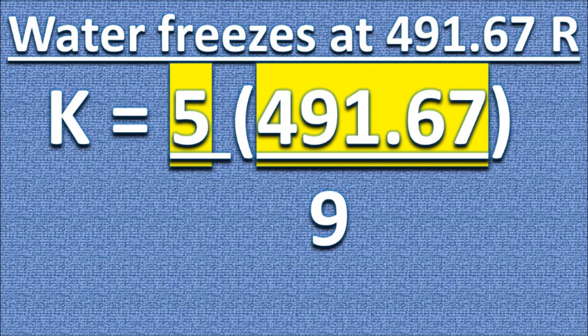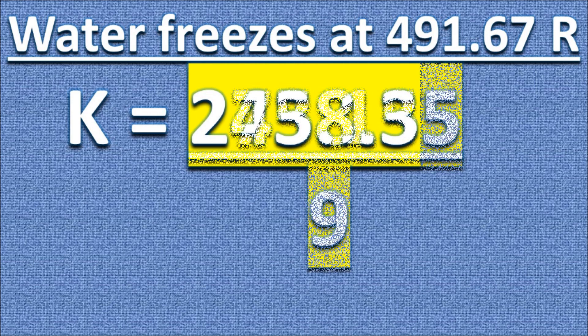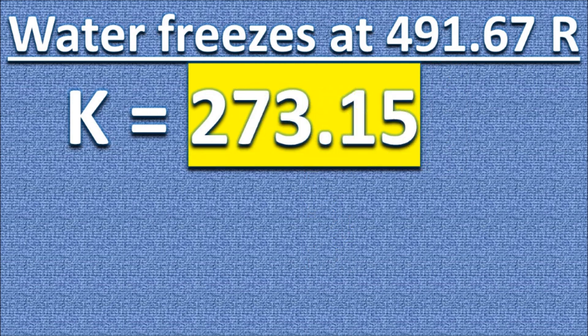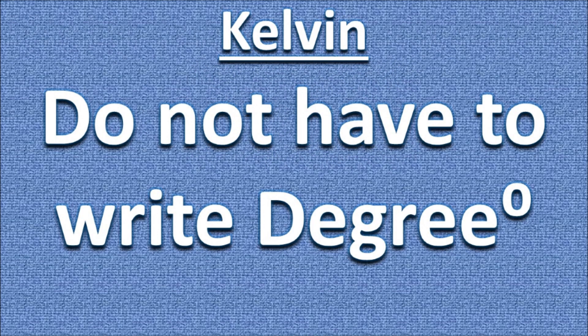Next, multiply 5 by 491.67. Now divide by 9. Water freezes at 273.15 Kelvin. With Kelvin, you do not need to write the degree symbol.